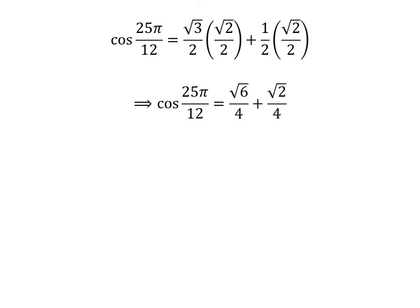Straight multiplication gives us cosine of 25 times pi upon 12 is equal to square root of 6 upon 4 plus square root of 2 upon 4.